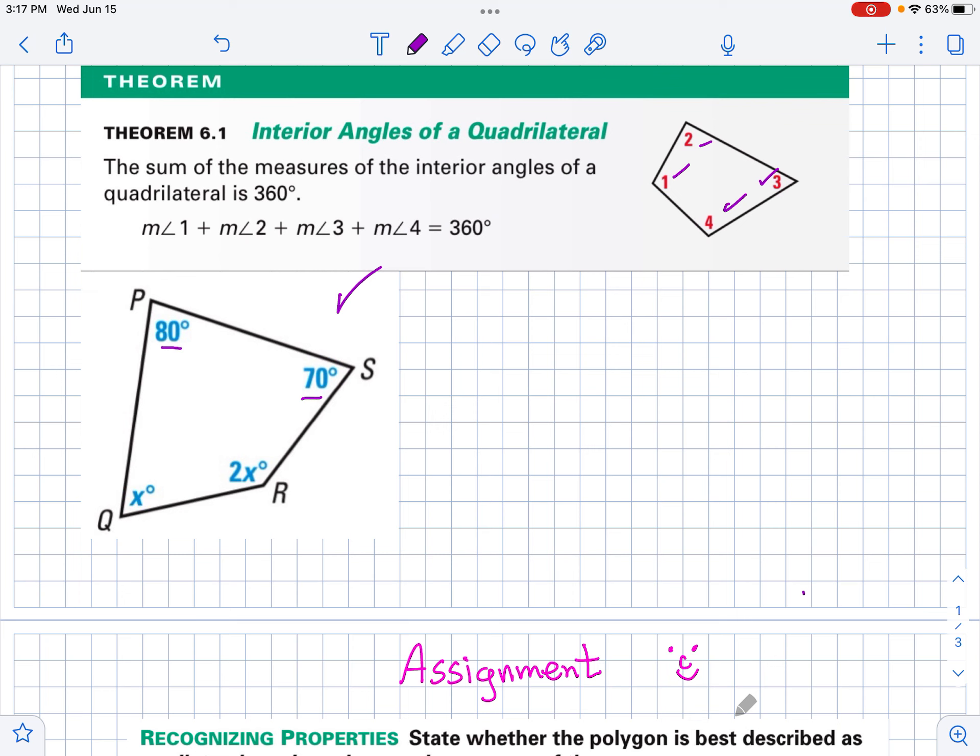Now, remember, that's different. A triangle, all the angles, all the interior angles add up to 180, but here they add up to 360. So, let's suppose I want to find x on this one. So, here's a typical problem. I know that x plus 2x plus 80 plus 70, I know that has to equal 360.